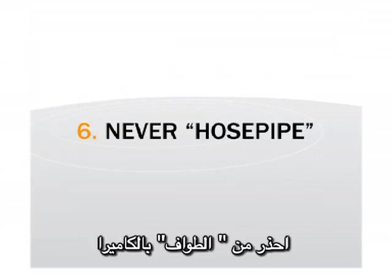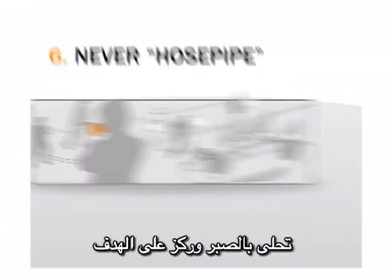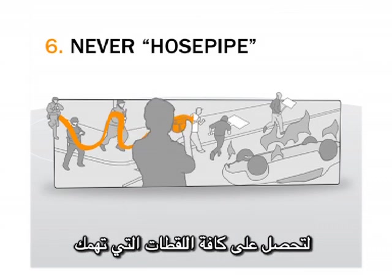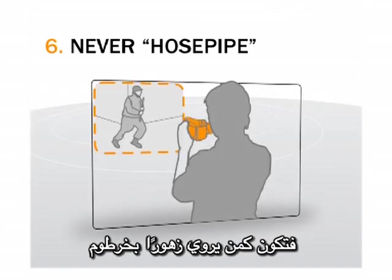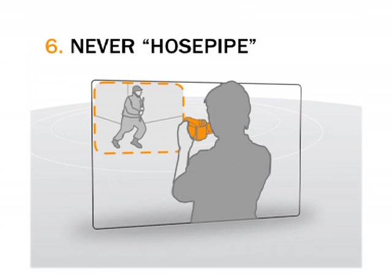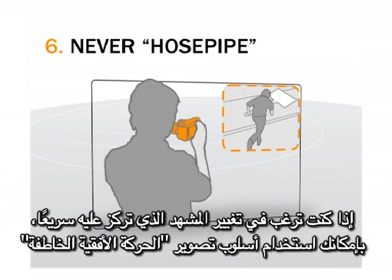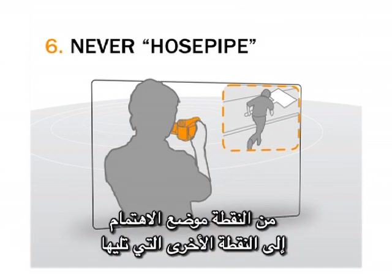Never hosepipe. Be patient and purposeful. Don't wave your camera or cell phone around to get all the points of interest as if you were watering flowers with a hose. Instead, pick a shot and hold it so that the viewer can see what is happening. If you need to change emphasis quickly, try using a swish pan, where you move your camera rapidly and deliberately sideways from one point of interest to the next.